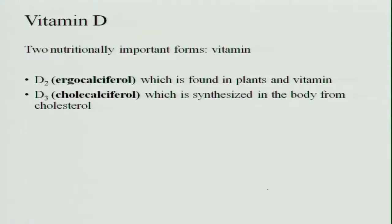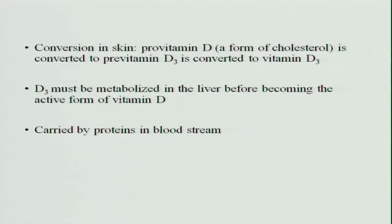There are two nutritionally important forms of vitamin D. One is vitamin D2, which is ergocalciferol, found in plant foods, and D3, which is cholecalciferol, which is synthesized in the body from cholesterol — that is, from sunlight it is synthesized in the body. In the skin, the provitamin D, which is a form of cholesterol, is converted into pre-vitamin D3 and then converted into the active form of vitamin D3.